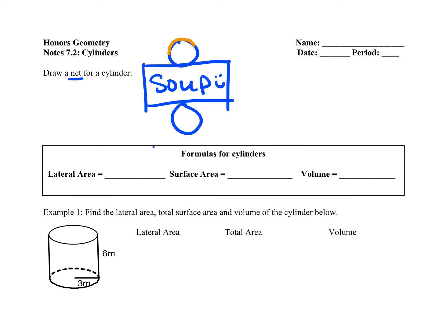This circle here would run along each of these edges, and this circle would run along this edge. That makes this the height of our cylinder.